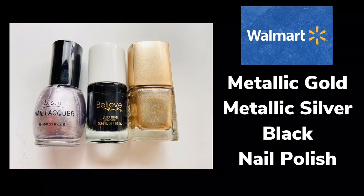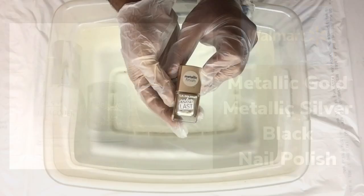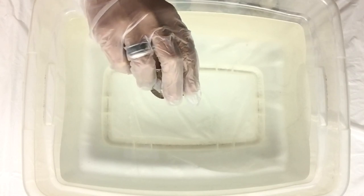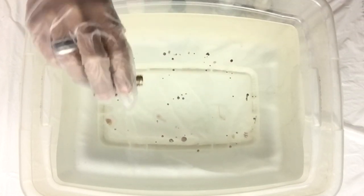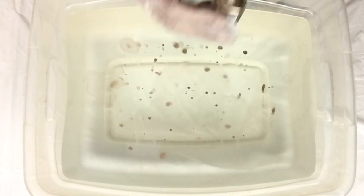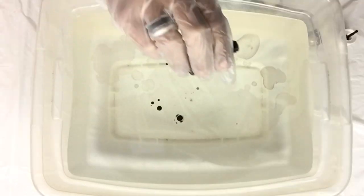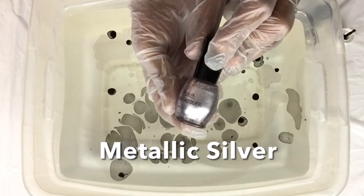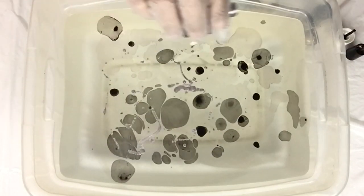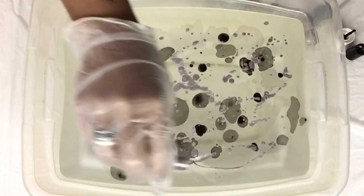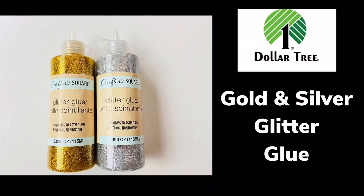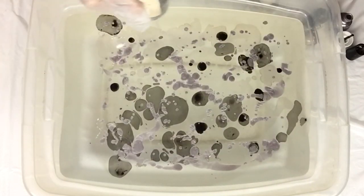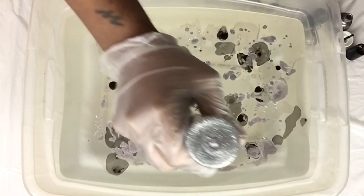I'll be using metallic gold, silver, and black nail polish. Starting off with the metallic gold, I'll add drops of nail polish into the water. As you can see, it floats on top of the water and spreads out. Next, I'll repeat the same steps with the black nail polish. You can add as much as you like or less. I'll repeat the same steps with the metallic silver, then with the gold and silver glitter glue. I'll have a complete list of all items used in the description bar below.